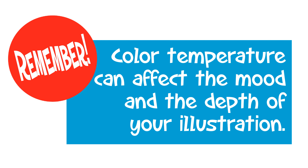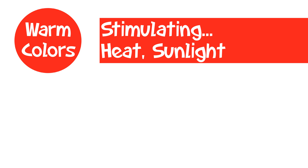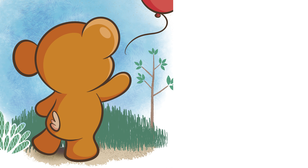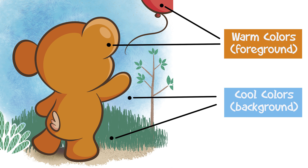Color temperature can affect the mood and depth of your illustration. Warm colors make us think of heat or sunlight — they're stimulating. Cool colors are more relaxing and calming, reminding us of water, sky, or grass. Warm colors stand out more and come to the front of a design, while cool colors tend to recede. This is a great way to give depth to your illustrations by using warm colors in the foreground and cool colors for the background. You can create a lot of contrast by playing warm and cool colors off of each other.